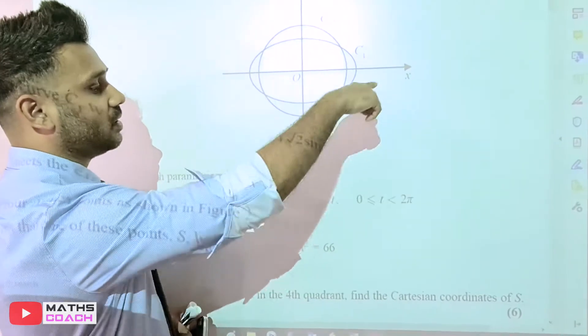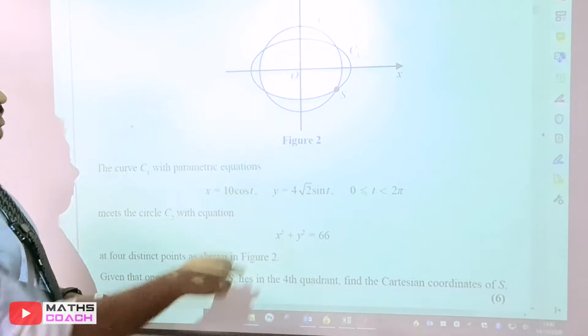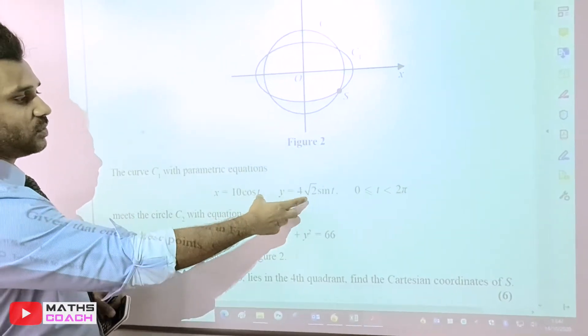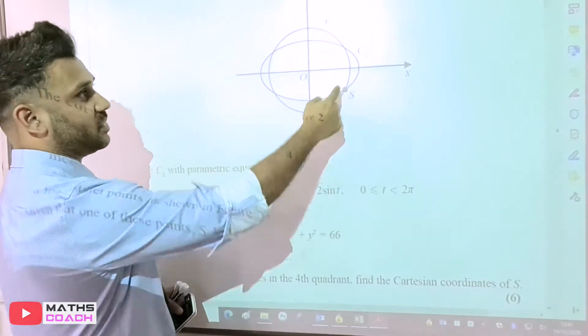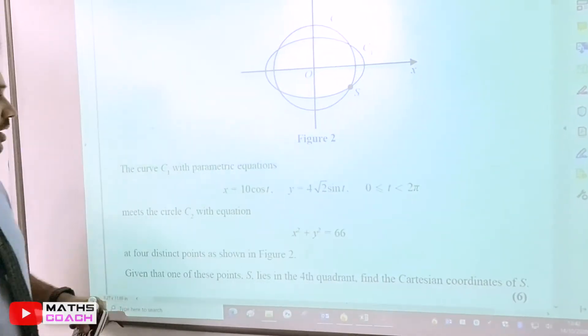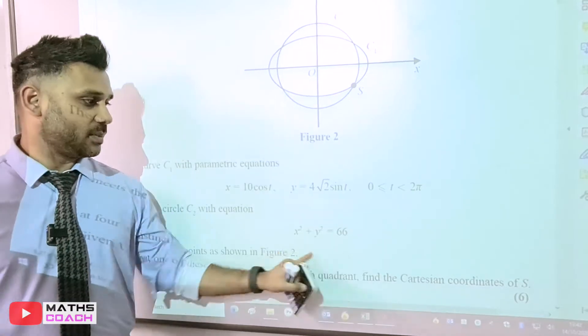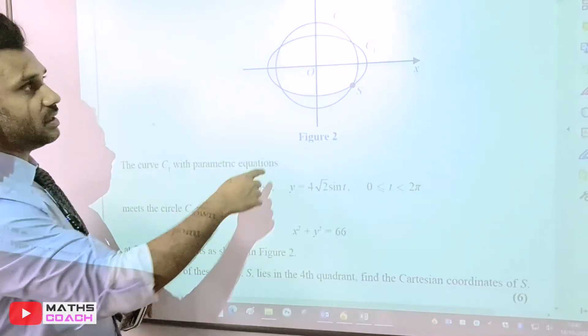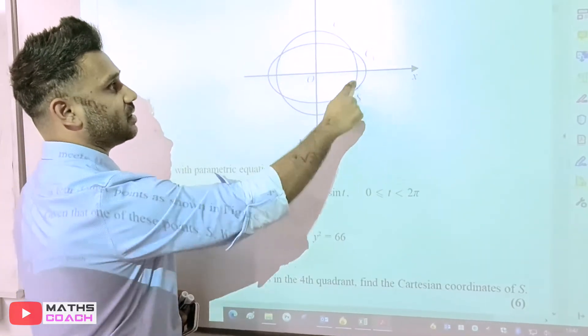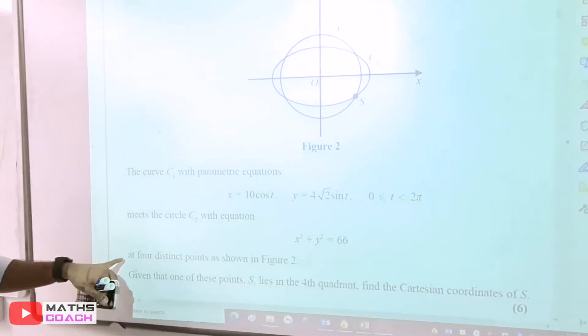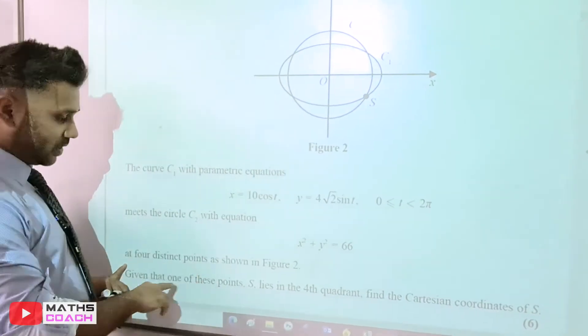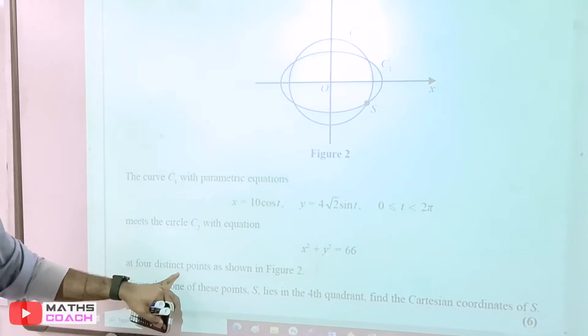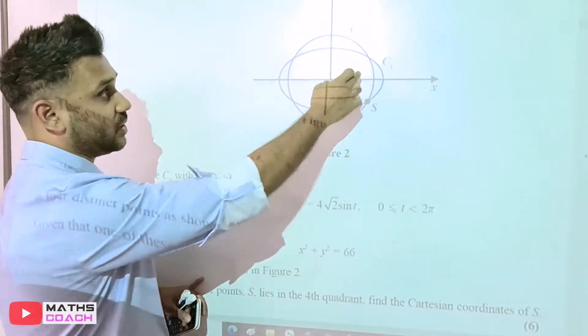This means t is running through the whole four quadrants. As t changes, it changes the x and y values which traces out curve 1, shown here as an oval shape. Curve 2 has the typical equation of a circle: x² + y² = 66. The diagram shows that the two curves have four distinct points where they intersect.